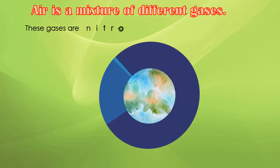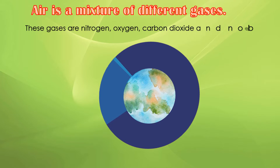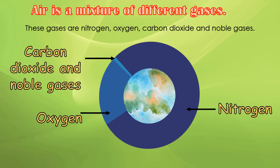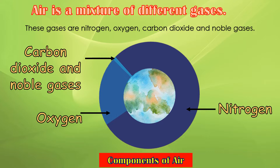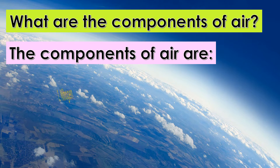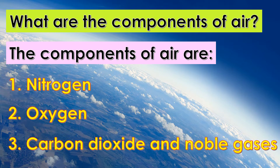Air is a mixture of different gases. These gases are nitrogen, oxygen, carbon dioxide, and noble gases. These are the components of air. What are the components of air? The components of air are nitrogen, oxygen, carbon dioxide, and noble gases.